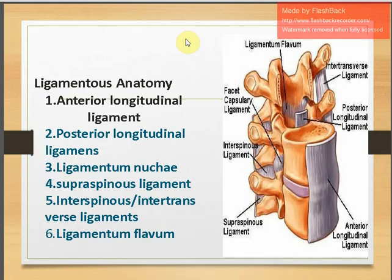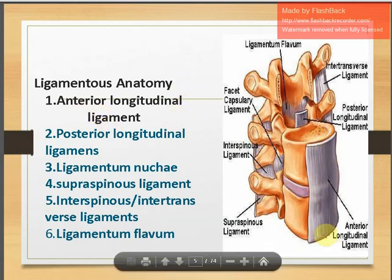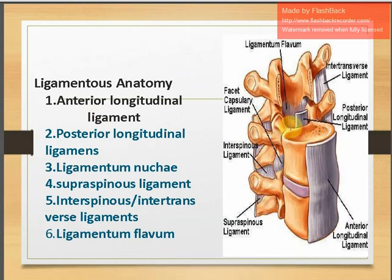The vertebral column as a whole is surrounded by strong ligaments and muscles. The anterior longitudinal ligament is present on the anterior side of the vertebral body, the posterior longitudinal ligament on the posterior aspect, along with superior and inferior supraspinous ligaments, interspinous ligaments, ligamentum nuchae, and the facet capsulary ligaments.